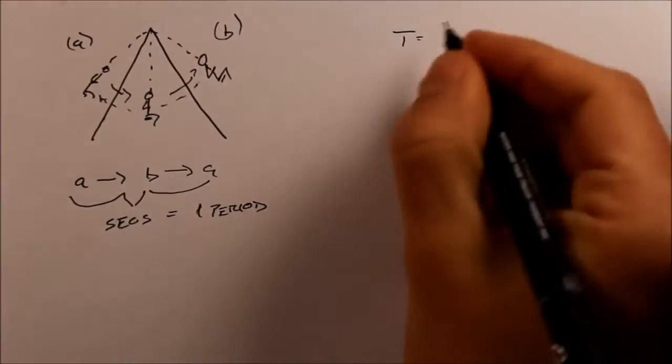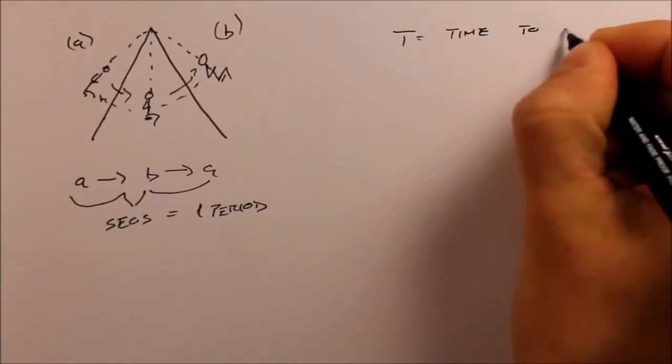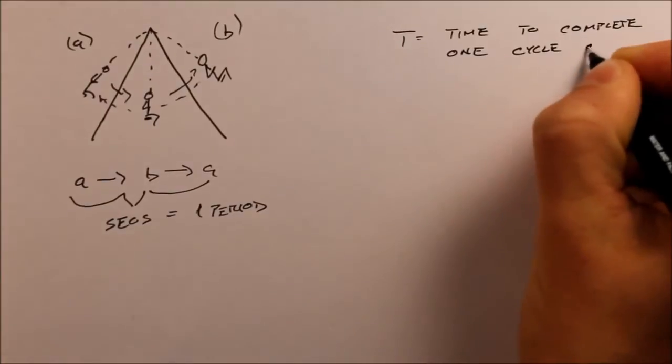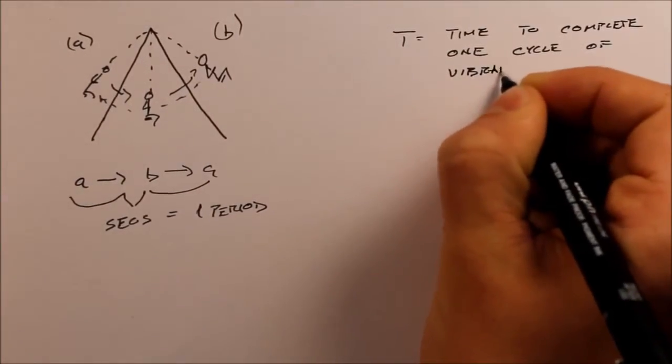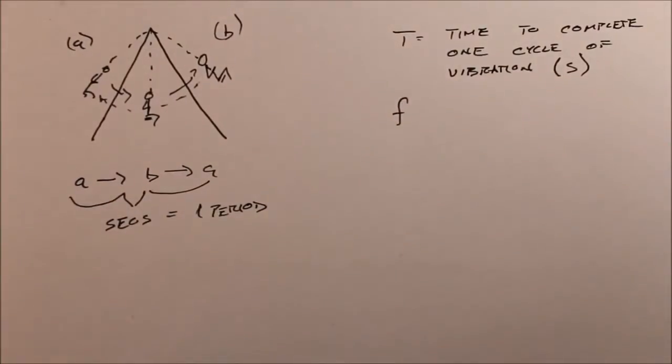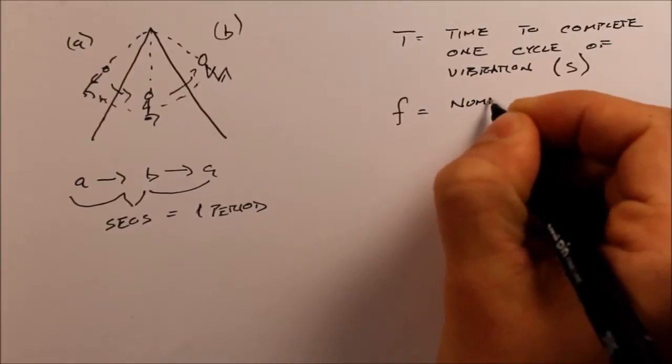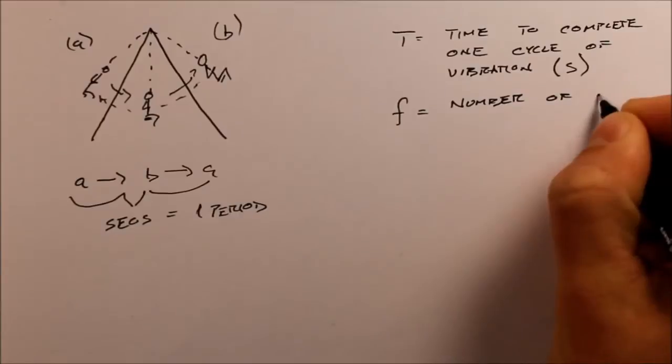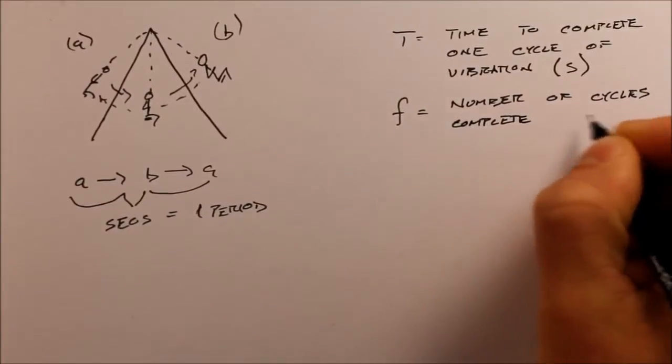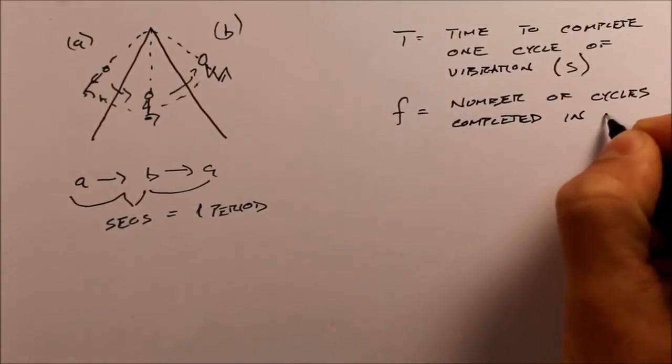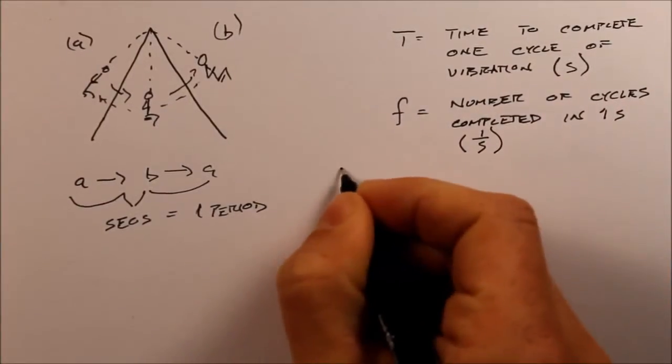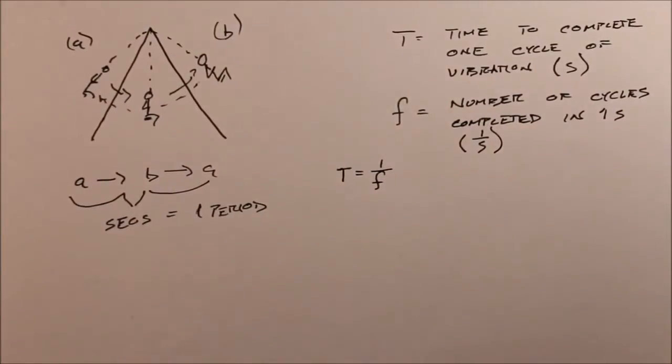Period, again denoted by the letter T, which is time to complete one cycle of vibration. And that's going to have the units of seconds. And frequency, just the inverse of period, and that is number of cycles completed in one second. And so it has units one over seconds. And that's because T equals one over F. That's the inverse.